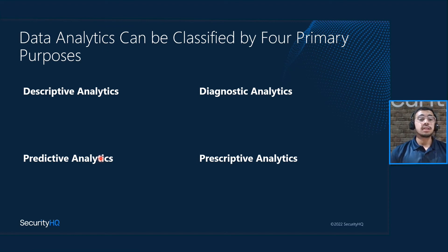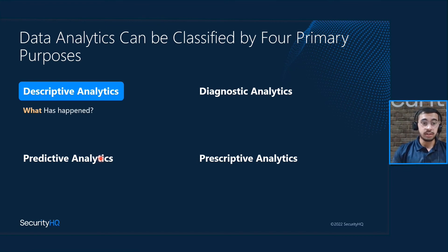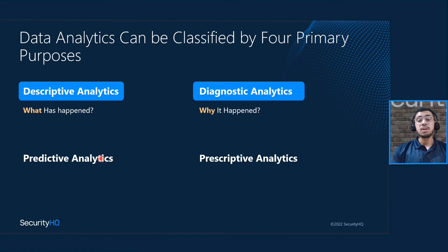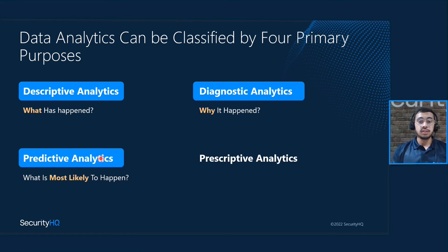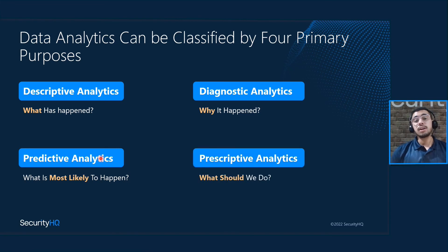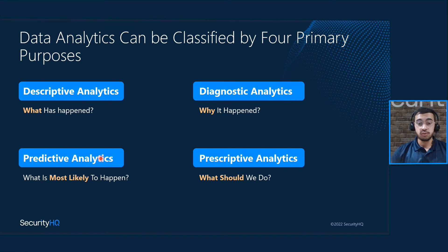First is descriptive analytics, which tells you what exactly happened during an event. Next is diagnostic analytics, which tells us why a particular incident or event occurred. Third is predictive analytics — using existing data, we can leverage patterns to predict future actions. The fourth and most advanced type is prescriptive analytics, which tells a particular client a course of action they need to follow in any situation, depending on the patterns and existing data analyzed.